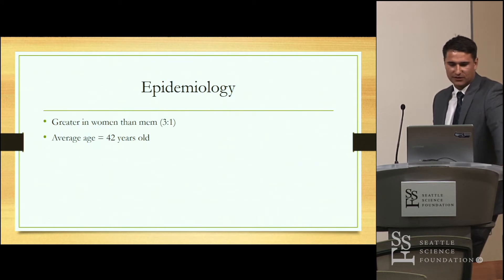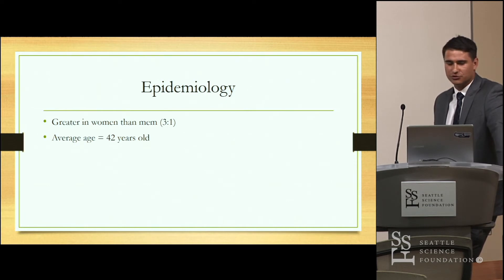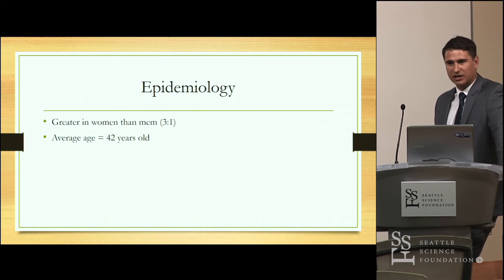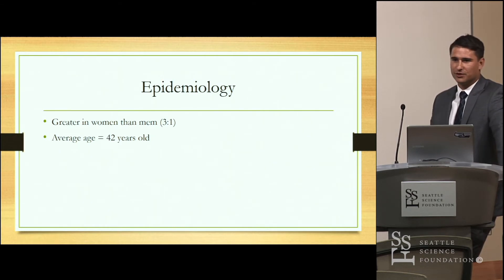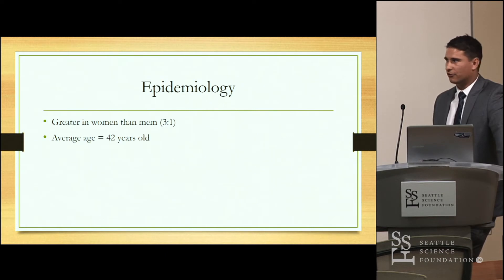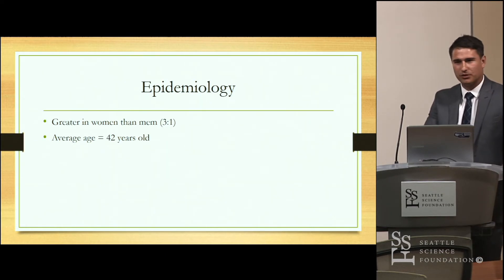Regarding epidemiology, the syndrome is more common in women — about 3 to 1, and in my review of the literature, approximately 76% of cases were in women. It usually occurs in middle age, around 42 years old, though cases range from as young as 19 to as old as 80. So middle-aged women are probably the most common presentation.